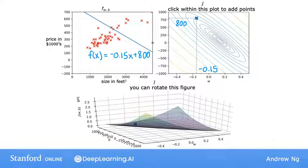f of x, which is this line that you can see on the left. This line intersects the vertical axis at 800, because B equals 800, and the slope of the line is negative 0.15, because W equals negative 0.15.